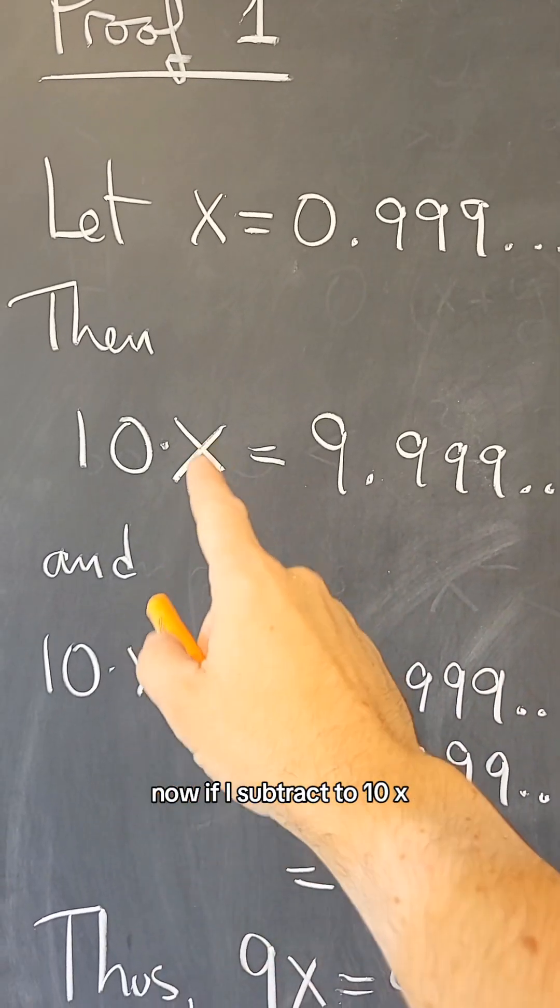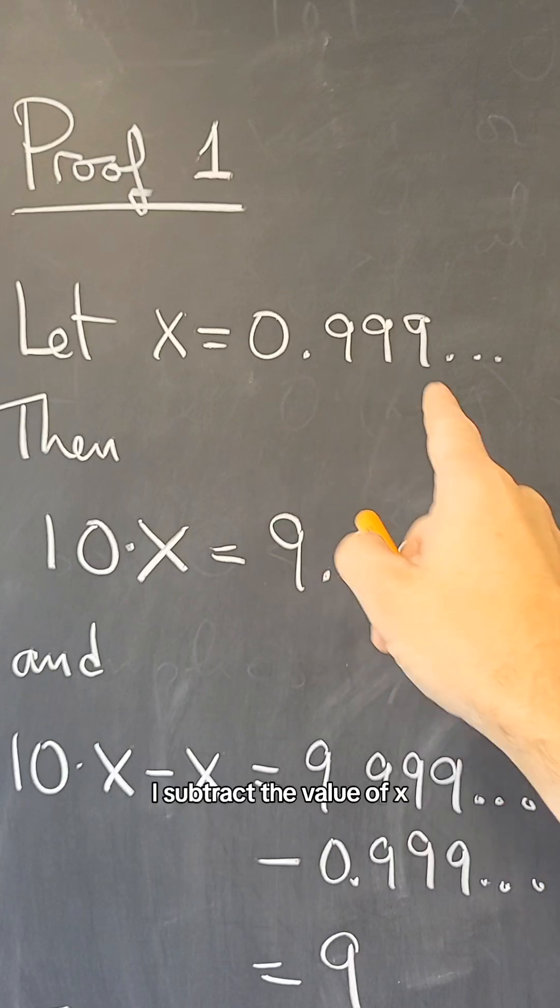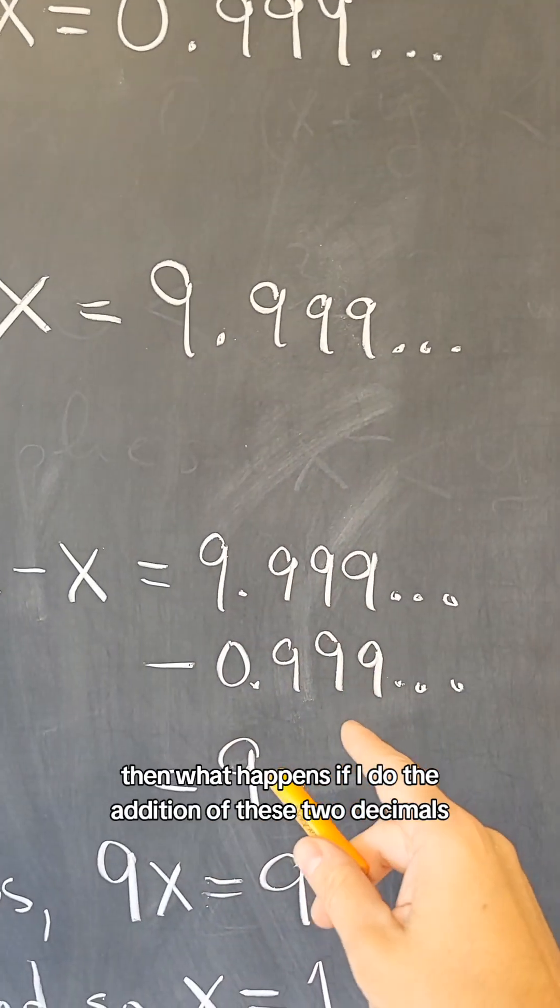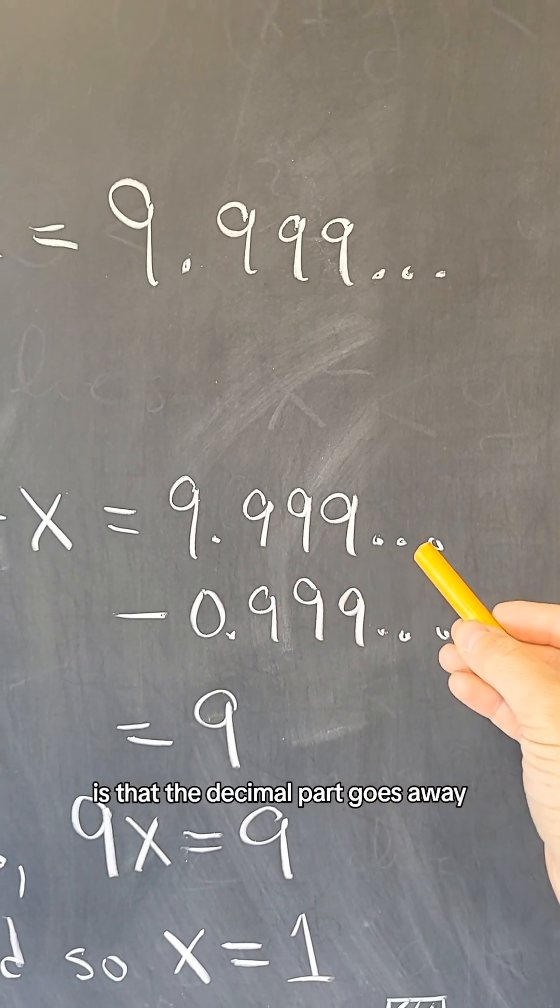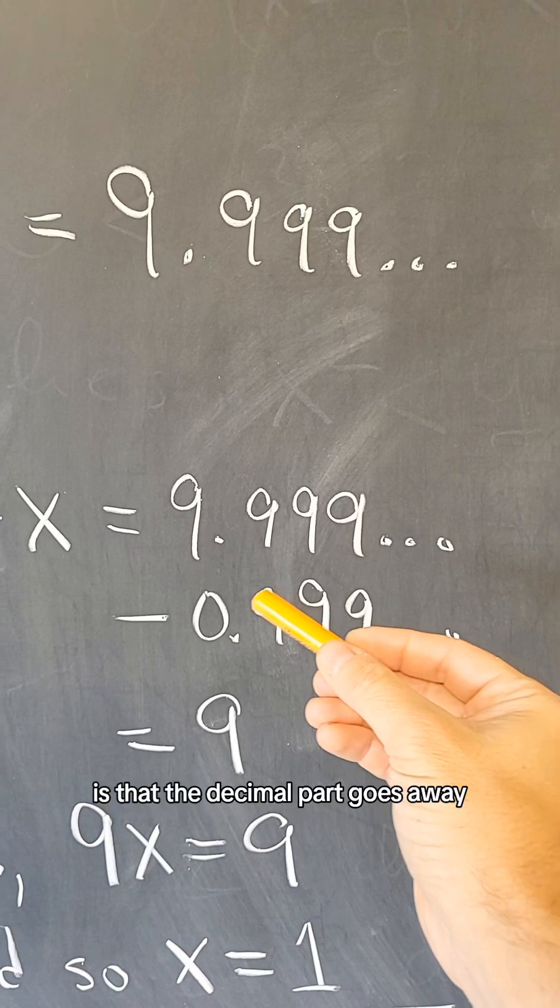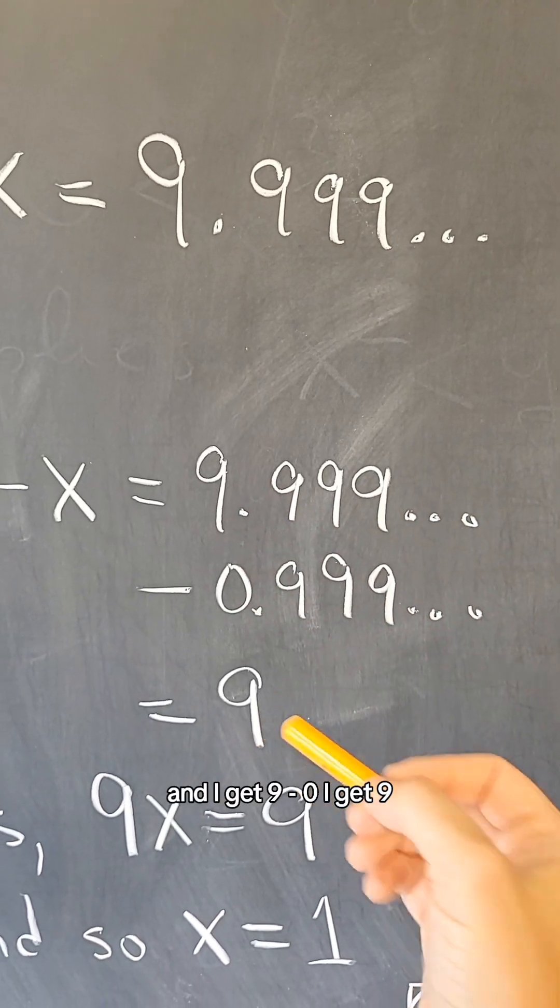Now, if I subtract from 10x the value of x, then what happens when I do the addition of these two decimals is that the decimal part goes away and I get 9 minus 0, I get 9.